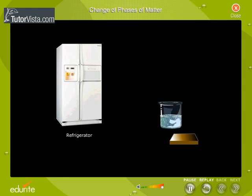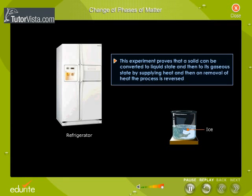We get back water in the form of ice. This experiment proves that a solid can be converted to its liquid state and then to its gaseous state by supplying heat, and then on removal of heat the process is reversed.